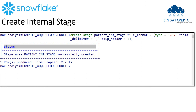Let me insert some records into the table via internal stages. To create an internal stage, the command is 'CREATE STAGE' followed by the stage name, and you declare your file format options. Here I am going to insert a CSV file with a comma delimiter and a header, so I declare those file format options. Once the syntax is correct, the stage will be created.